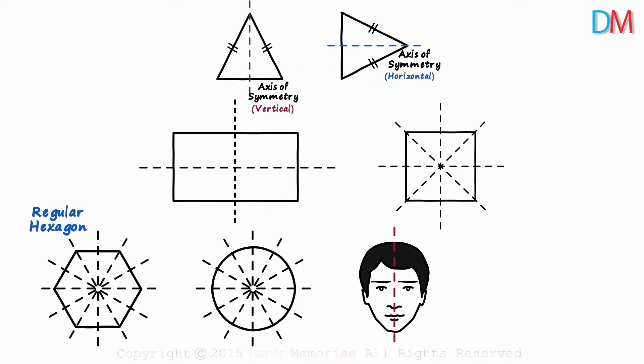What we saw in this video is reflectional symmetry. If one part is kept against a mirror, its reflection will give us the other part. Let's say we keep half the hexagon on this side of the mirror, its reflection will give us the other half. Hence it's called reflectional symmetry.